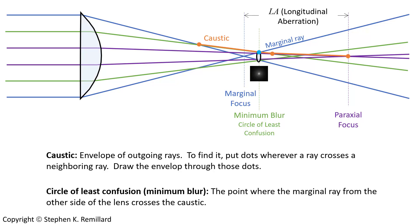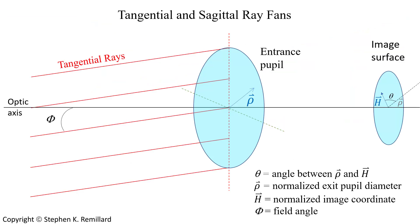If you're imaging a star, you would expect to see a point of light on the screen. Instead, you'll get a blurred image with a circular pattern that is independent of the azimuthal angle — it's the same as you go all the way around the circle. That is a fingerprint of spherical aberration: there's no angle dependence on the screen. If you go to the marginal focus, you'll have a crisper pattern but still less well focused than at the point of minimal blur.